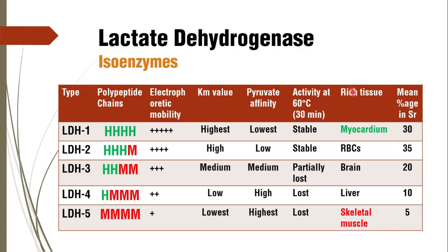The isoenzymes of LDH are numbered 1 to 5 based on electrophoretic mobility — the fastest is LDH1 and the slowest is LDH5. LDH1 contains all four H subunits and is richest in myocardium. LDH5 contains all four M subunits and is richest in skeletal muscle. LDH2 (H3M) is richest in RBCs, LDH3 (H2M2) in brain, and LDH4 (HM3) predominantly in liver.